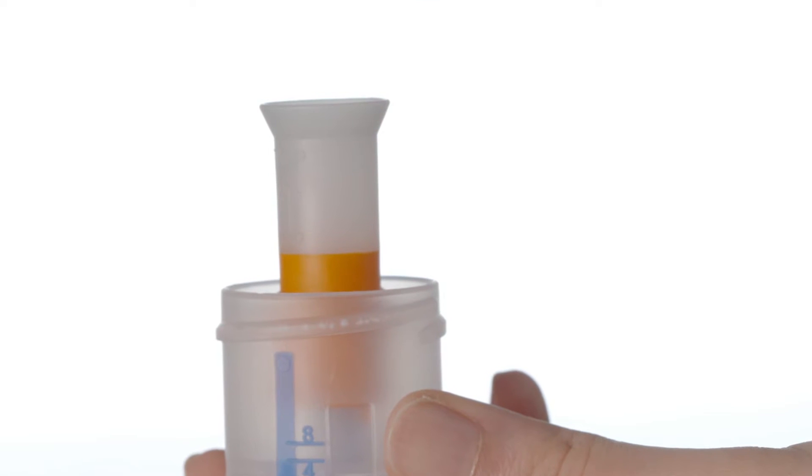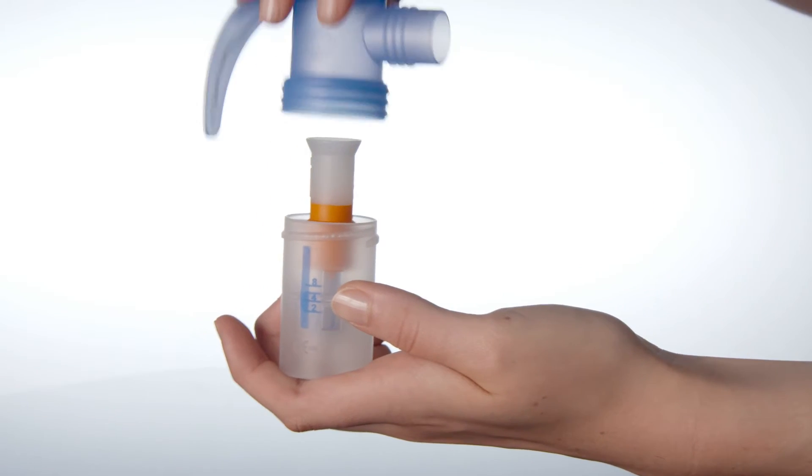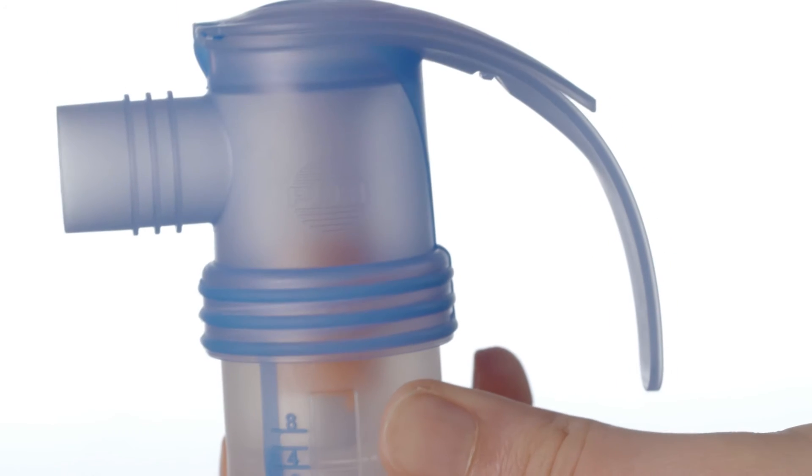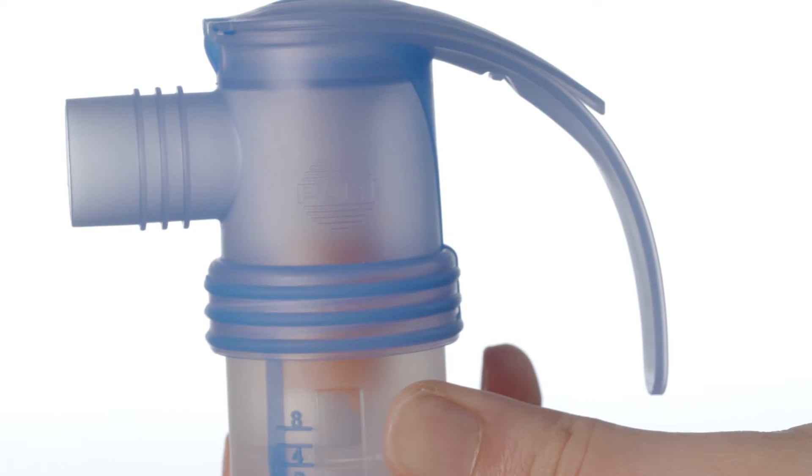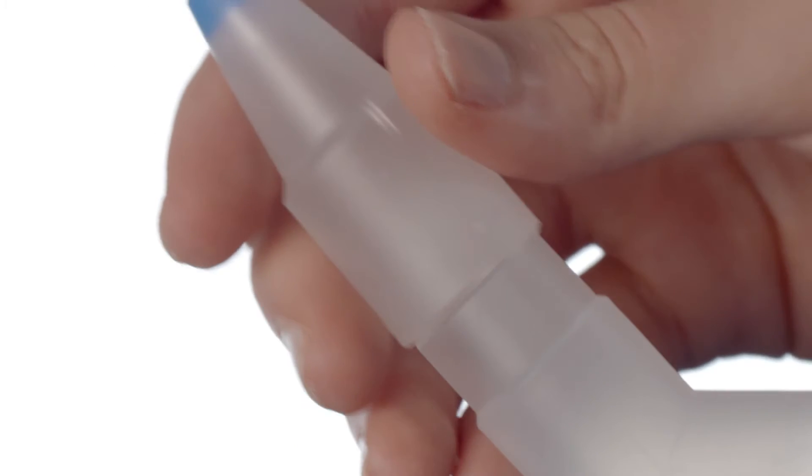To do this, insert the orange nozzle attachment into the lower section of the nebulizer. Place the upper section of the nebulizer on top and firmly close it by turning it in a clockwise direction. Connect the bend and the nasal joining piece.